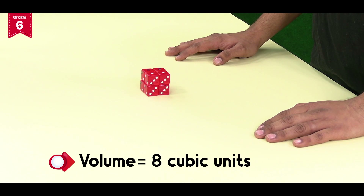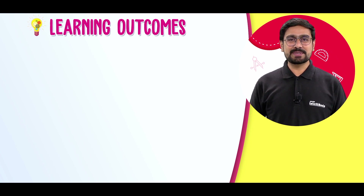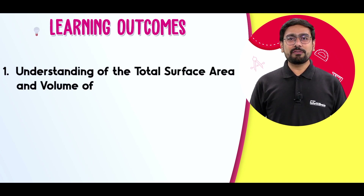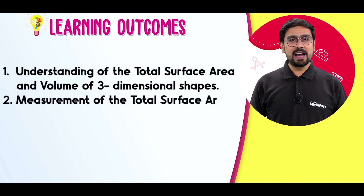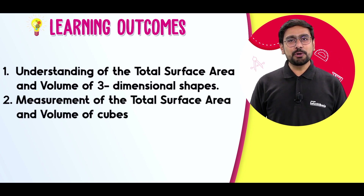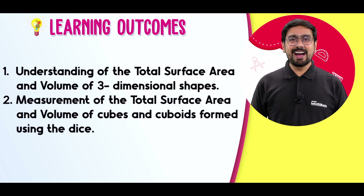After doing this activity, you will have gained expertise in the following concepts: understanding of the total surface area and volume of three-dimensional shapes, and measurement of the total surface area and volume of cubes and cuboids formed using dice. Now you can use the dice to make more cubes and cuboids to measure their total surface area and volume. Visualize maths with IntelliB rain and fall in love with learning.